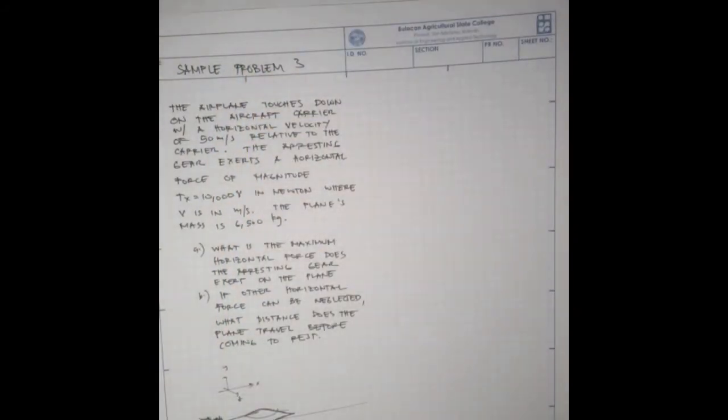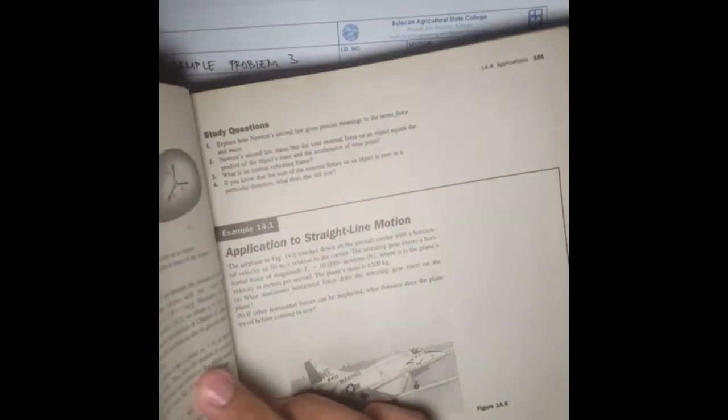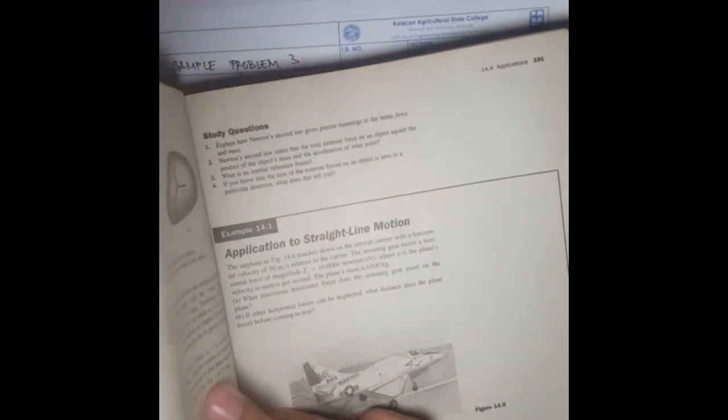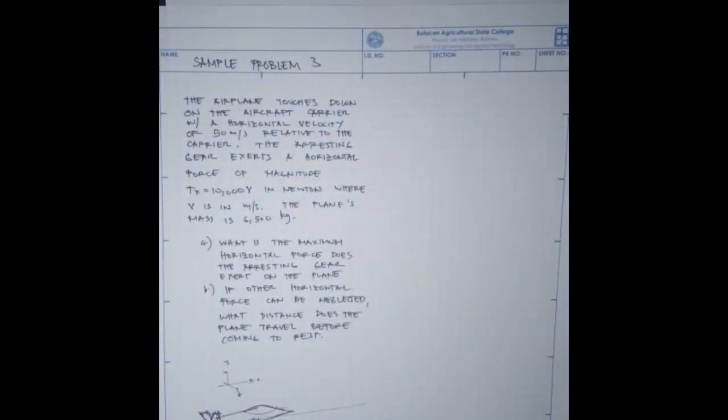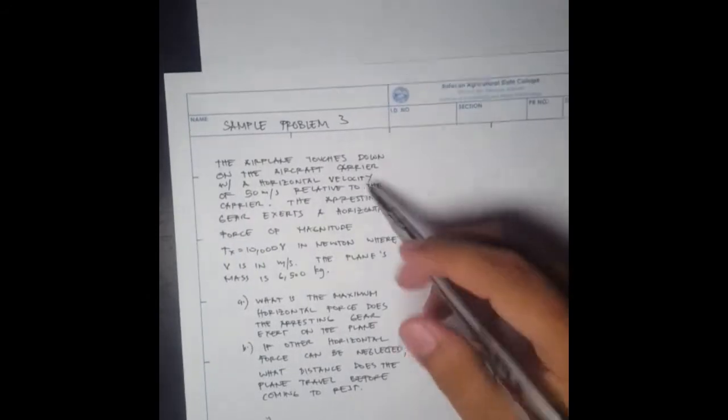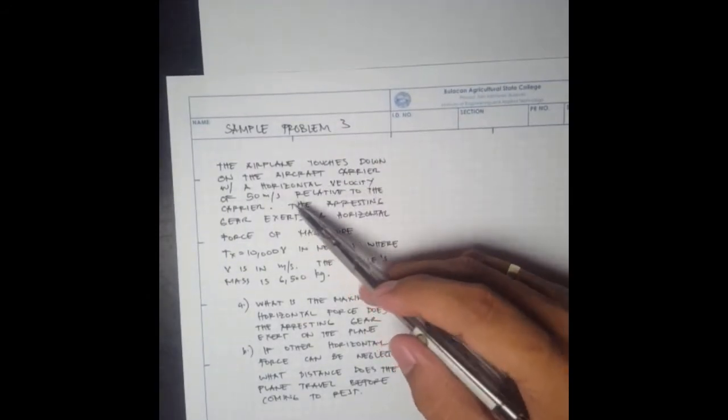Let's start. This is Example 14.1. The problem is: the airplane touches down on the aircraft carrier with a horizontal velocity of 50 meters per second relative to the carrier.